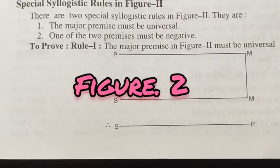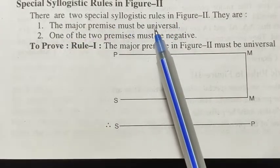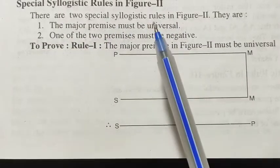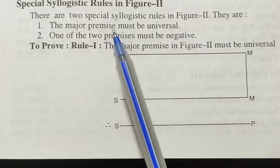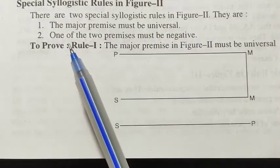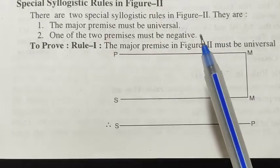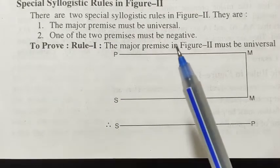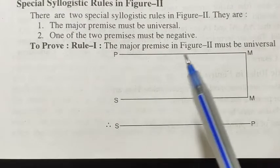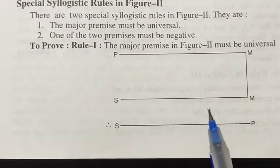Now the special syllogistic rules in Figure 2. There are two special syllogistic rules in Figure 2. Rule number 1: the major premise must be universal. Rule number 2: one of the two premises must be negative — that is, at least one premise must be negative in Figure 2.